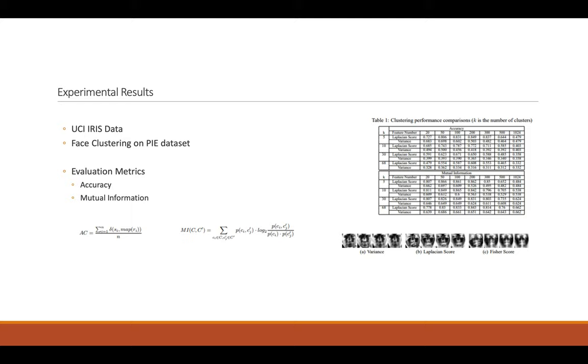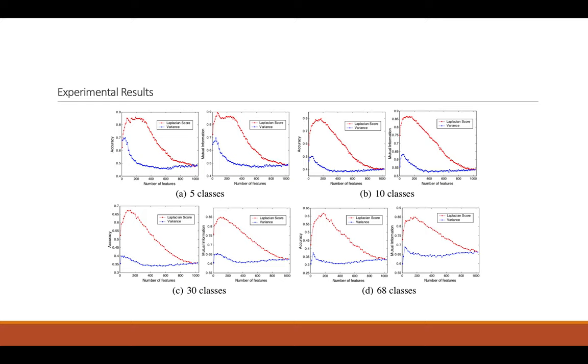Accuracy and mutual information are used as evaluation metrics. As you can see, Laplacian score has far better results when you compare with the variance. It's also used for unlabeled data. Laplacian score can be used for both labeled and unlabeled data.